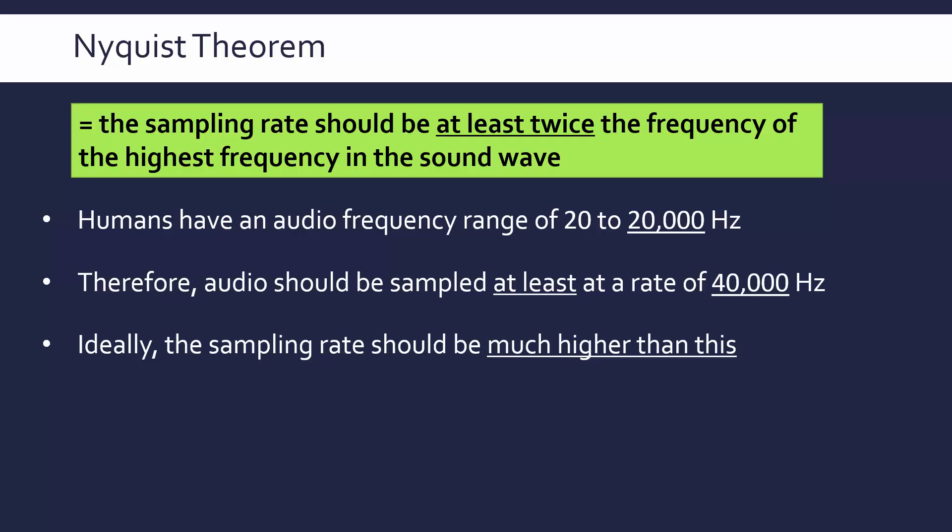It should be, as the formula says, at least twice. And so we want it to be higher, ideally, because the higher sample rate, the higher quality. But as we know, the trade-off is the more you sample per second, the more data gets saved, and so a bigger file size.